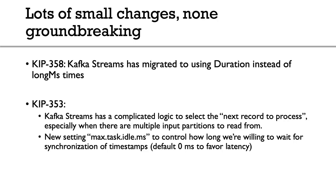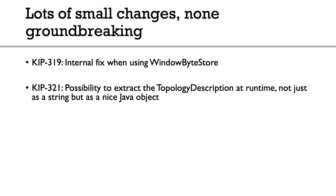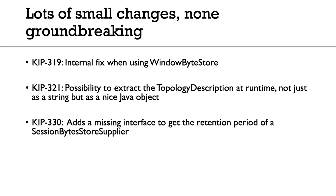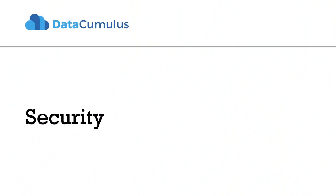Other small Kafka Streams changes include an internal fix when using WindowByteStore, the ability to extract a topology description at runtime as a Java object, and KIP-333 which adds a missing interface for retention period for session store suppliers. Also, when using a store builder you can now call `withCachingDisabled()` in addition to `withCachingEnabled()`, though the default remains that caching is disabled.